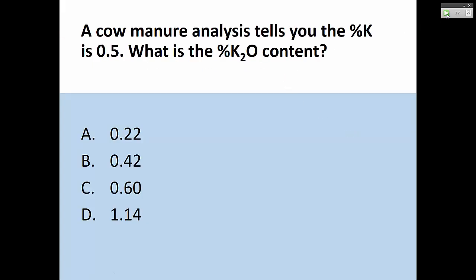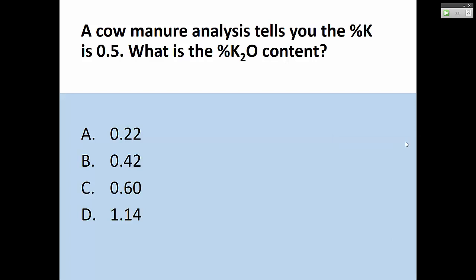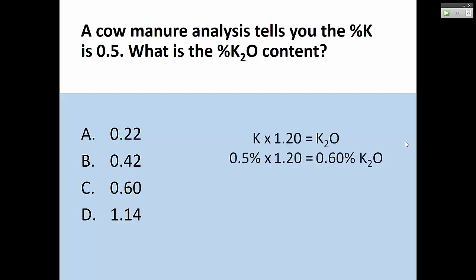Practice question: A Kjeldahl analysis tells you that the potassium percent is 0.5%. What is the percent potash content? We know it's half a percent as potassium, so it can't be less as K₂O than as K — because K₂O expands what you look like you have. Our conversion factor is 1.20 (the inverse of 0.83). You wouldn't even need to do any math — you can look at the answers and know it has to be the one just above 0.5. The answer is 0.5 times 1.23, which is 0.6% potash.